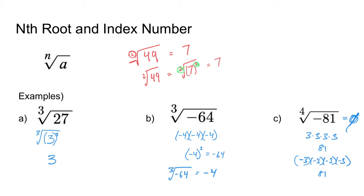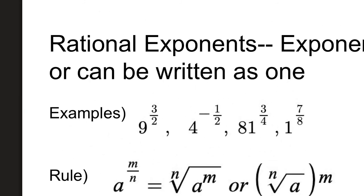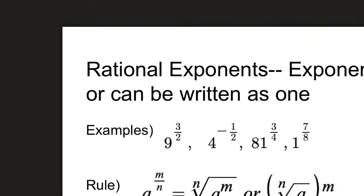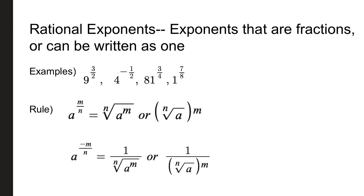We have the nth root of different numerical values, but sometimes the nth root is not the most efficient way to write exponents. So sometimes we rewrite radicals using rational exponents. Rational numbers are numbers written as fractions, so rational exponents would be things like 9 to the 3 halves power, 4 to the negative 1 half power, 81 to the 3 fourths power, and 1 to the 7 eighths power. Rational exponents are exponents that are fractions.